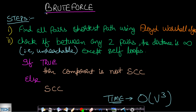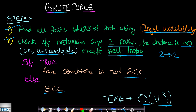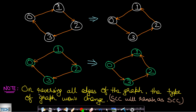The brute force algorithm to determine whether a graph or component is strongly connected is to find all-pairs shortest paths using the Floyd-Warshall algorithm, then check if any pair of vertices has infinite distance — excluding self-loops. If any such infinite-distance pair exists, the component is not strongly connected. This algorithm has a time complexity of O(V³) due to Floyd-Warshall.